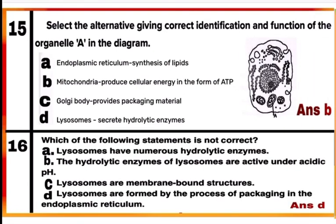Question 15: Select the alternative giving correct identification and function of organelle A in the diagram. Option B — organelle A in the diagram is mitochondria, which produces cellular energy in the form of ATP, so it is also called the powerhouse of the cell.